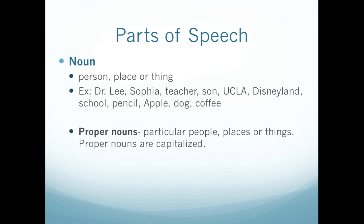We have two types of nouns: proper nouns and common nouns. Proper nouns are particular people, places, or things, and proper nouns are capitalized. So you can think of it as a specific person. For example, Dr. Lee is a specific person. Sophia is a proper noun — it's a specific woman or girl, and that's why her name is capitalized. UCLA is not just any school or university; it's a specific university, University of California, Los Angeles. So that would be a proper noun as well. Disneyland and Apple are also proper nouns. Apple with a capital A would be the company and not the fruit. So any companies or businesses — their names would be proper nouns.